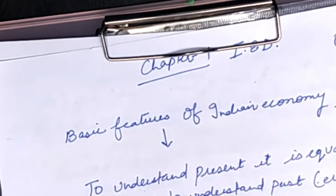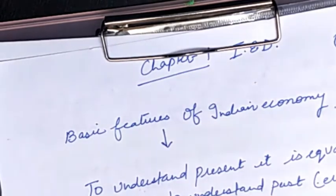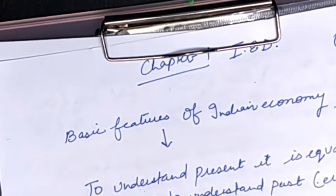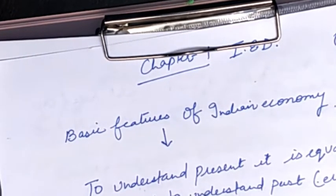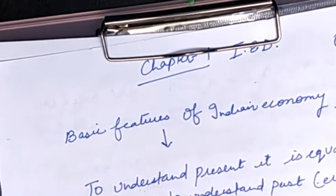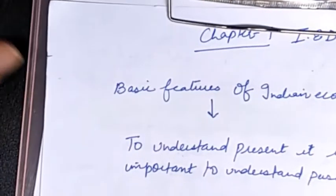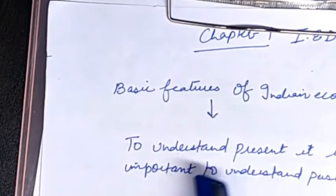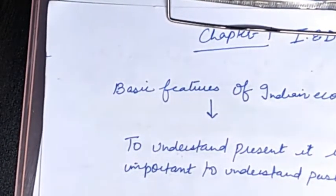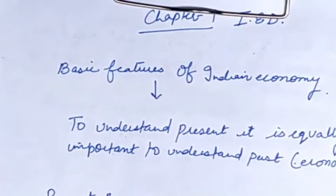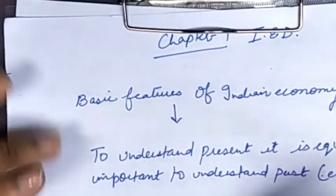The pre period means at the time of Britishers. From independence in 1947 we will study till 1991, and then after 1991 when India took major steps for development. To understand the present, it is equally important to understand the past. India's present position has links with all these time periods, so we will proceed accordingly.